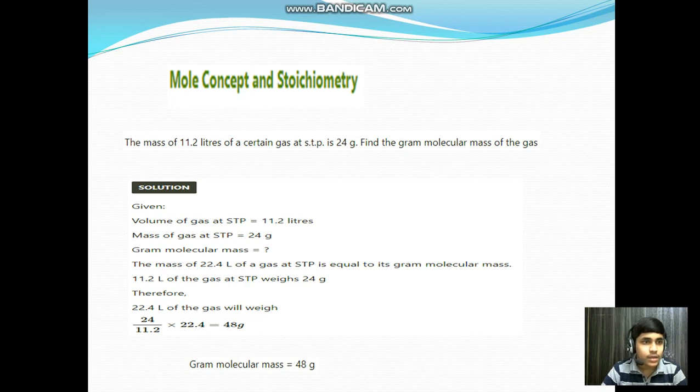The mass condition: the mass of 22.4 liters of a gas at STP is equal to its gram molecular mass. 11.2 liters of the gas at STP weighs 24 grams. Therefore, 22.4 liters of the gas will weigh 24 by 11.2 into 22.4 gives rise to 48 grams. Therefore, the gram molecular mass is 48 grams.